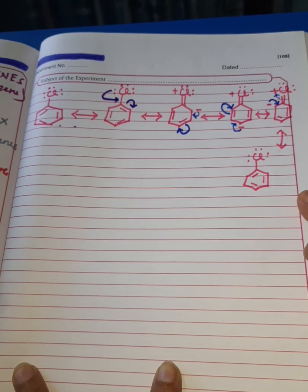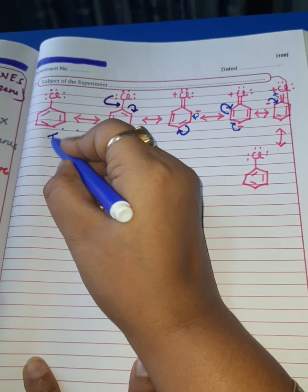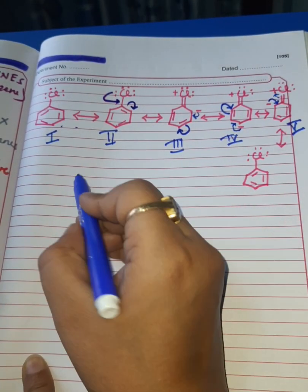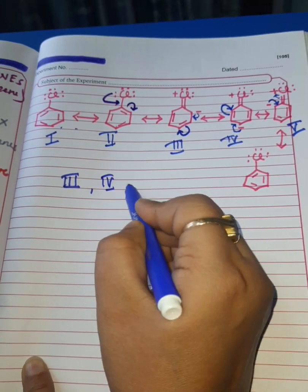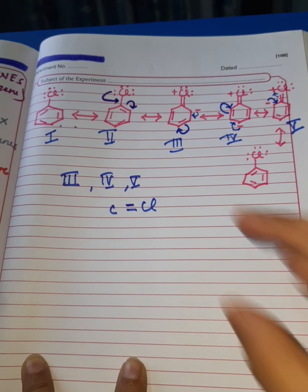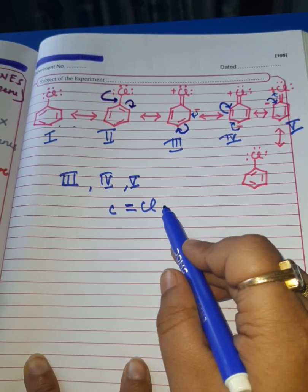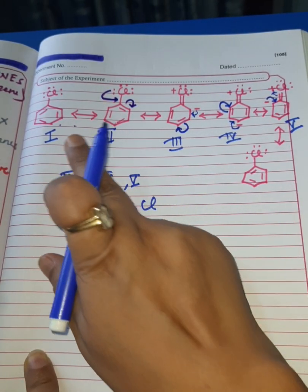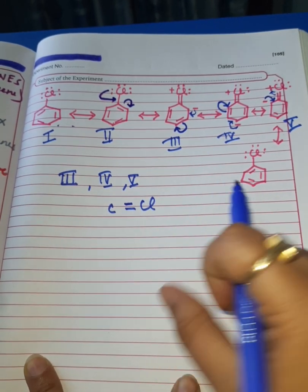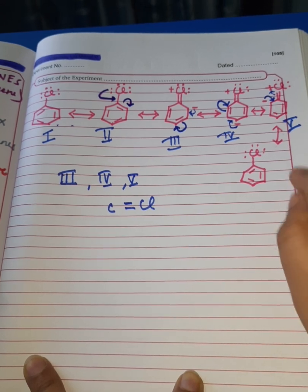If you look at these structures, it is clear that the C-Cl bond — numbering the structures one through five — in structures three, four, and five, the C-Cl bond acquires double bond character. This double bond character shortens the bond length of the C-Cl bond. Since the bond length is shortened, as a result the bond becomes strong. So due to resonance stabilization in chlorobenzene, the C-Cl bond becomes a strong and stable bond, which is a very important factor for the lesser reactivity of chlorobenzene.